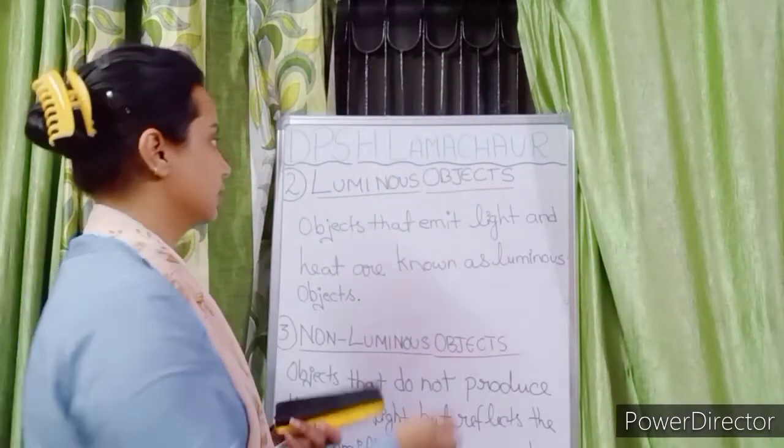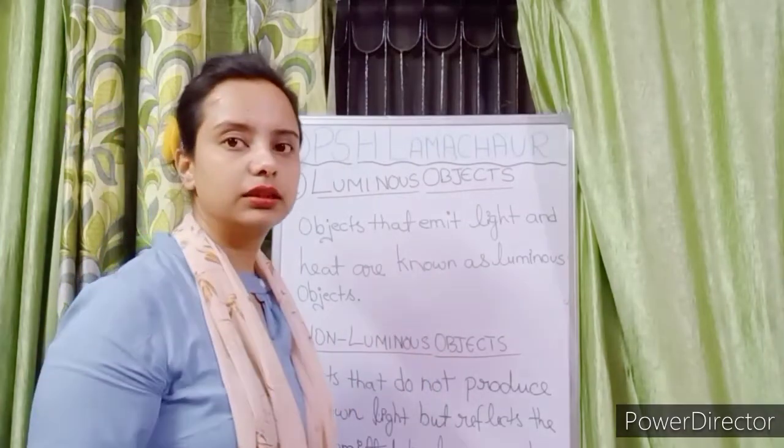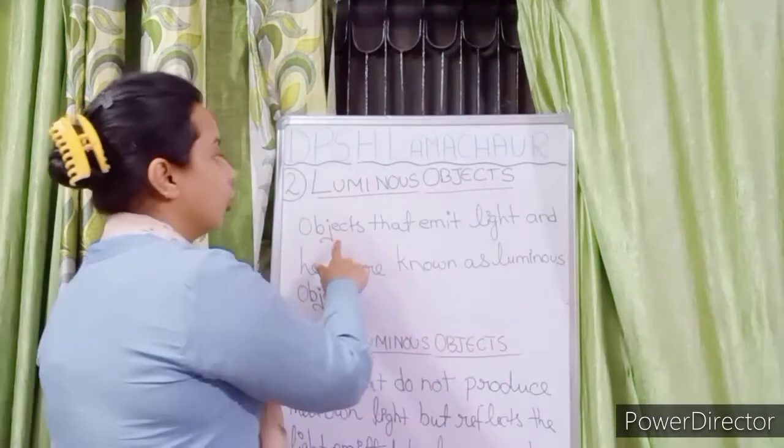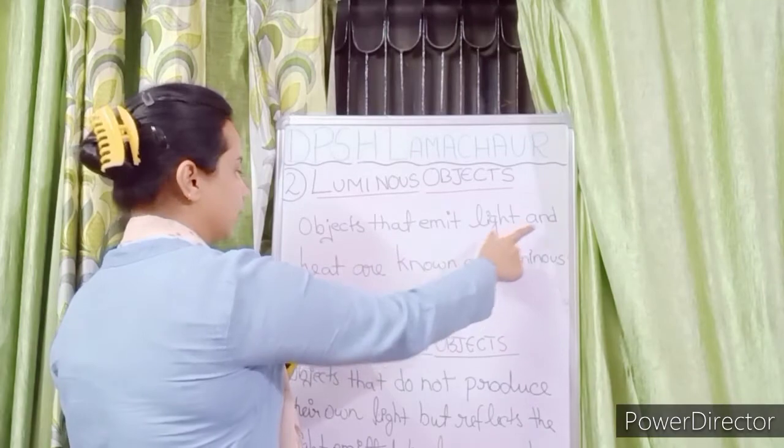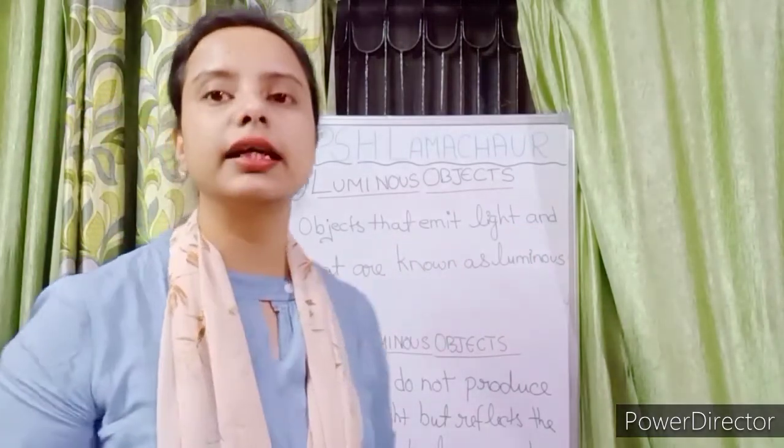Our next topic is luminous objects and non-luminous objects. What are luminous objects? Objects that emit light and heat are known as luminous objects. For example, the sun emits its own light as well as heat.